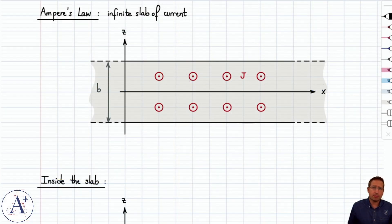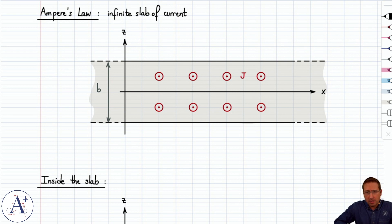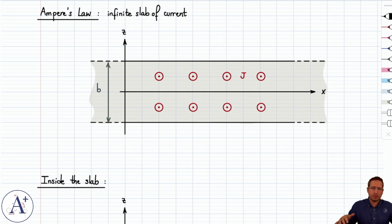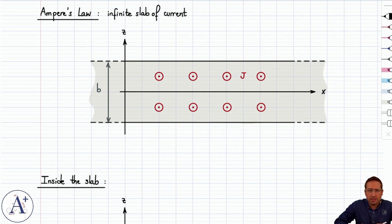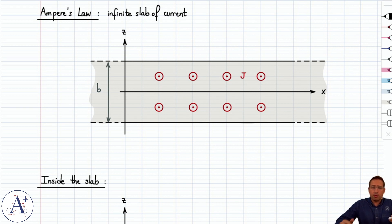Let's consider an infinite slab of current and see how we can apply Ampere's law to derive the magnetic field it creates everywhere. The slab extends infinitely to the left, to the right, and into and out of the page — essentially infinitely in the horizontal plane. It has a thickness b and carries a current density J, which is current per unit area, directed out of the page toward us. We want to find the magnetic field created everywhere.